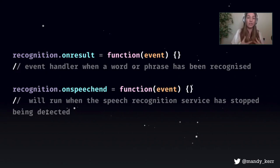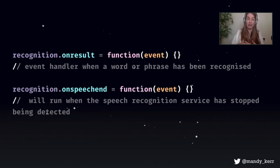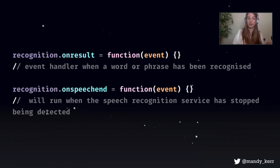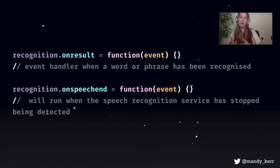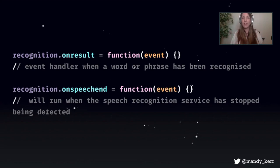We also need a couple of event handlers. Most of them simply listen for changes in recognition status. Two of the main ones: onresult, which runs when the service returns a result — this is really special because it's executed every time the user speaks a word or several words in quick succession. Then we have onspeechend, which runs when the speech recognition service has stopped being detected. The way speech recognition works is it will keep listening until it hears a pause long enough — if I stop speaking and am silent for a few seconds, it stops and tries to return a result.